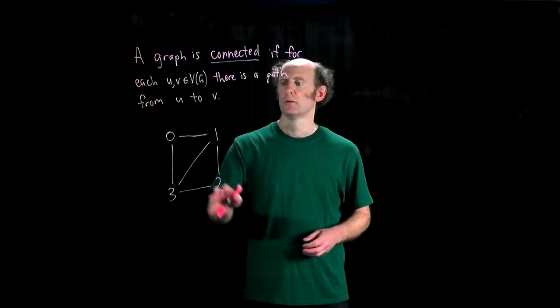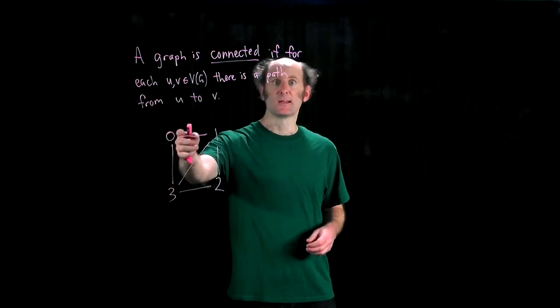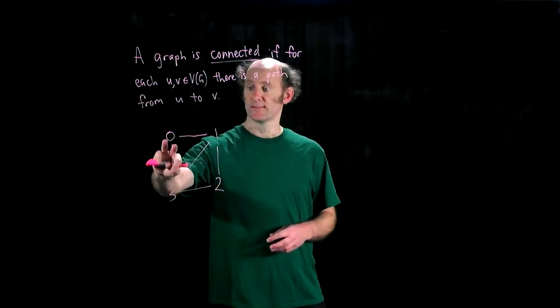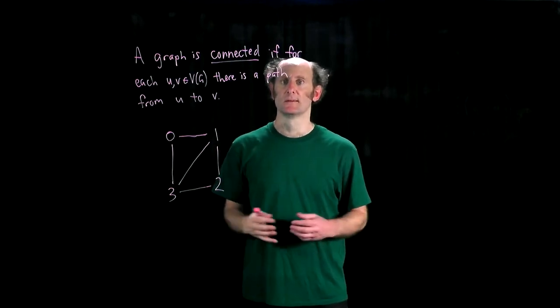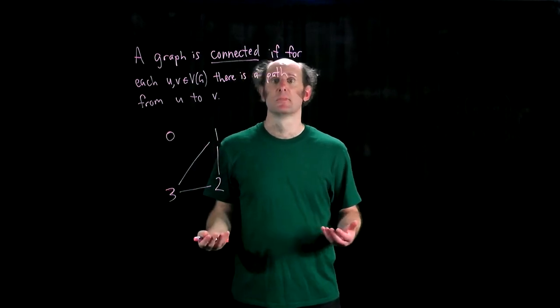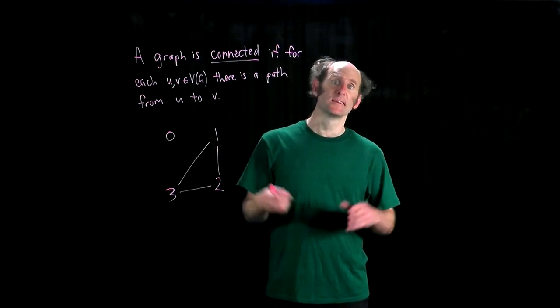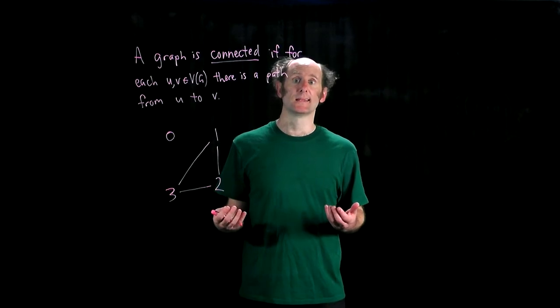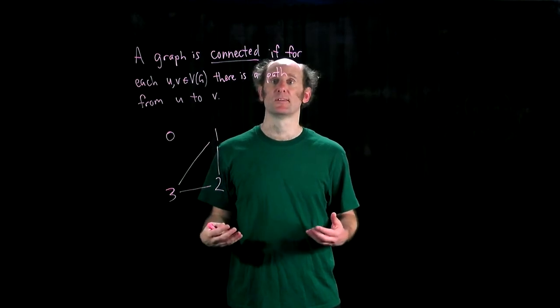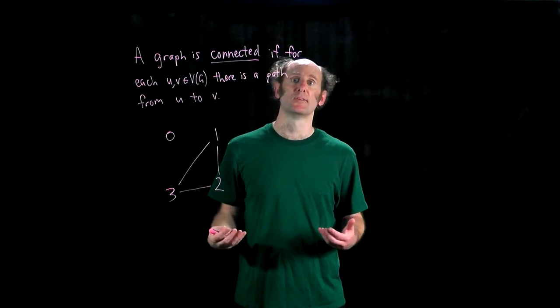Let's look at an example. This graph is connected as we can get from any vertex to any other by following the edges. But if we remove this edge and this edge, the graph becomes disconnected. So this graph is now not connected, as if we start at vertex zero there are no paths out. So the different parts of a graph that are disconnected from one another are known as the connected components. One connected component here is just the vertex zero, another connected component is the other vertices one, two, and three.